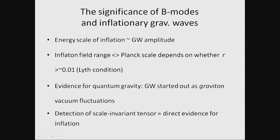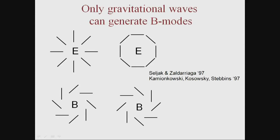If you see a scale-invariant tensor, you're measuring the Hubble scale during inflation. The energy density remains constant during inflation — that's almost the definition of inflation. That's why the search for this B-mode is a big deal, for all these theoretical reasons — not just because we want to discover gravitational waves again.